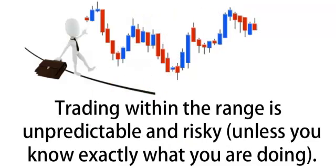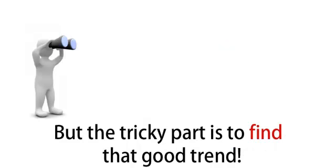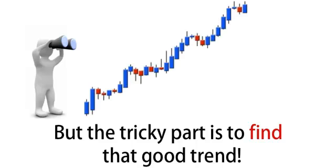Trading within the range is unpredictable and risky unless you know exactly what you're doing. The truth is that most Forex systems or robots make money with the trend but lose money in a choppy market. But the tricky part is to find that good trend.